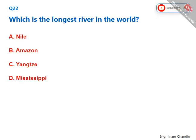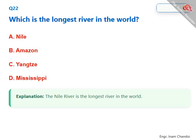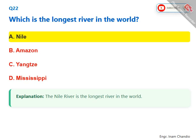Which is the longest river in the world? The Nile River is the longest river in the world. The correct answer is A. Nile.